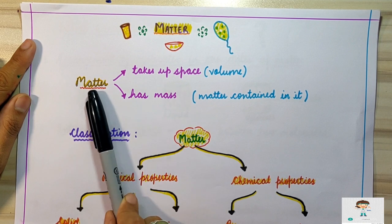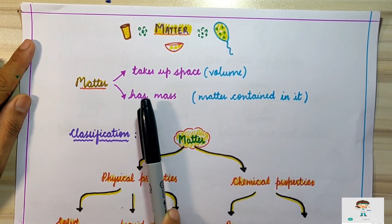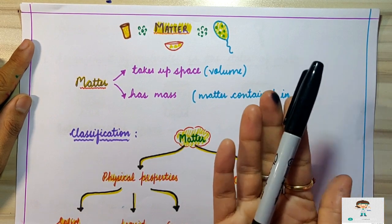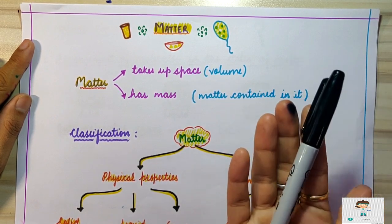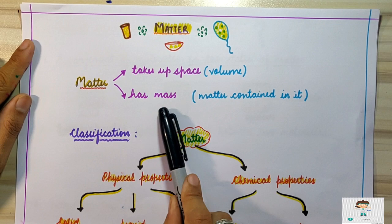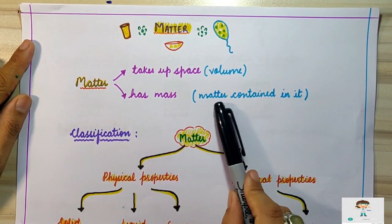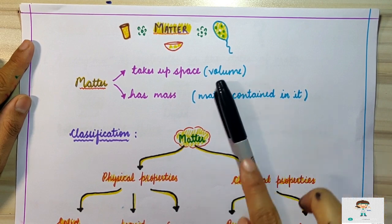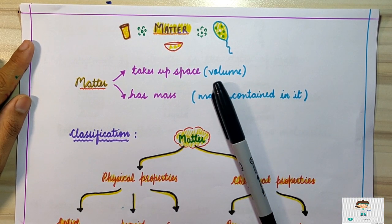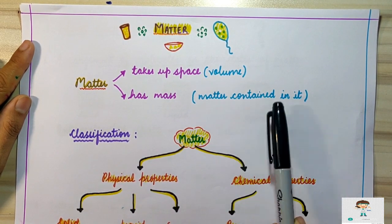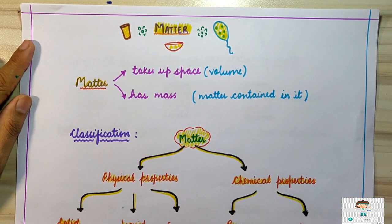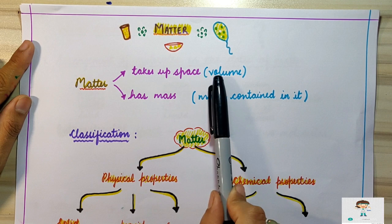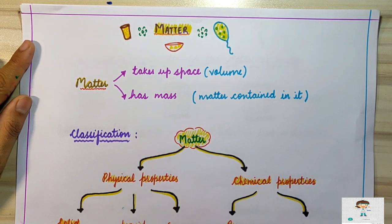The second condition is: anything around us which has mass can also be considered as matter. For example, if I am keeping this pen in my hand, I can feel the weight of the pen — I can feel the mass of the pen. Mass is the matter contained in it, or we can say this pen is made up of a large number of small particles which combine together to form the mass of this pen.